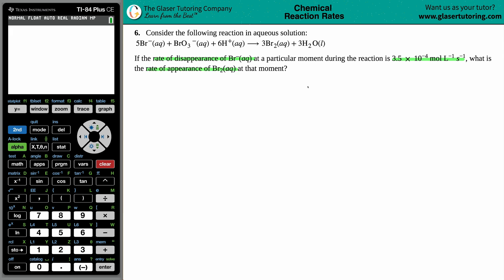Okay, so looks a little scary, but I promise you it's not. The first thing I'm going to do is just write the balanced equation again. So we have 5 Br minus aqueous plus BrO3 minus.